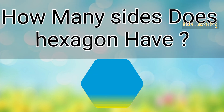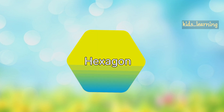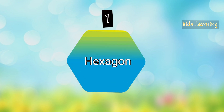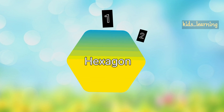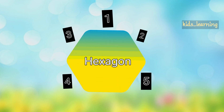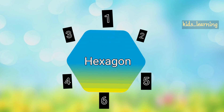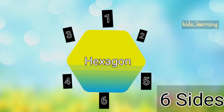How many sides does a hexagon have? Let's count. 1, 2, 3, 4, 5, 6. A hexagon has 6 sides.